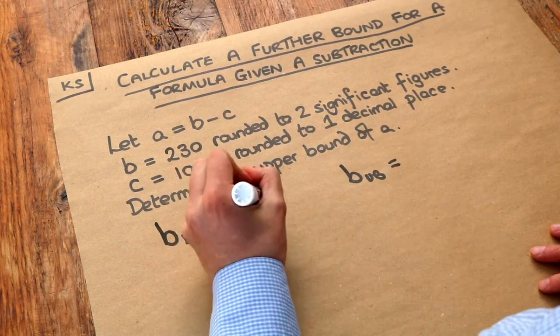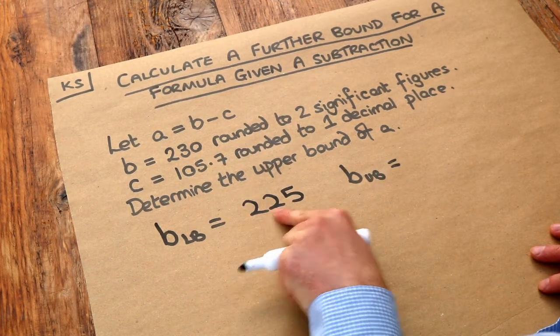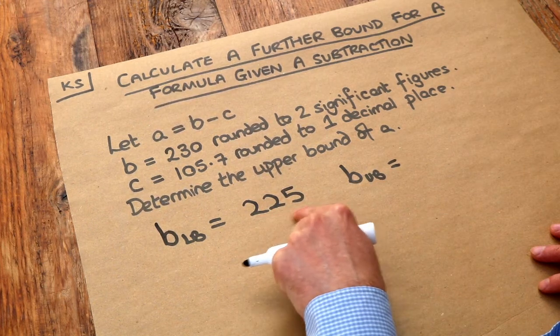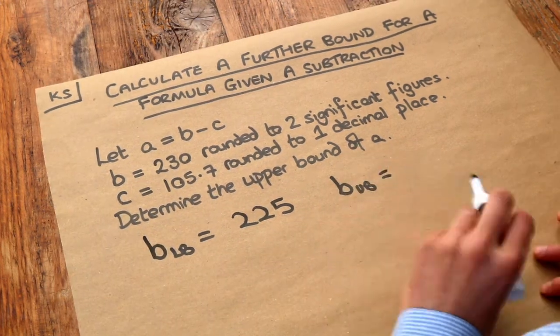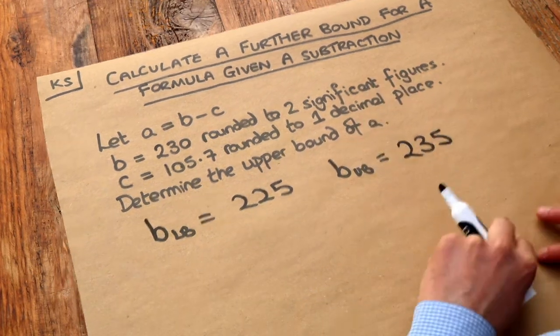Well it's 225 because that to two significant figures would be 230, but if I had 224 for example that would round to 220 to two significant figures, and the upper bound is going to be 235 but I'm not going to go into too much detail there because we explored that in a previous video.